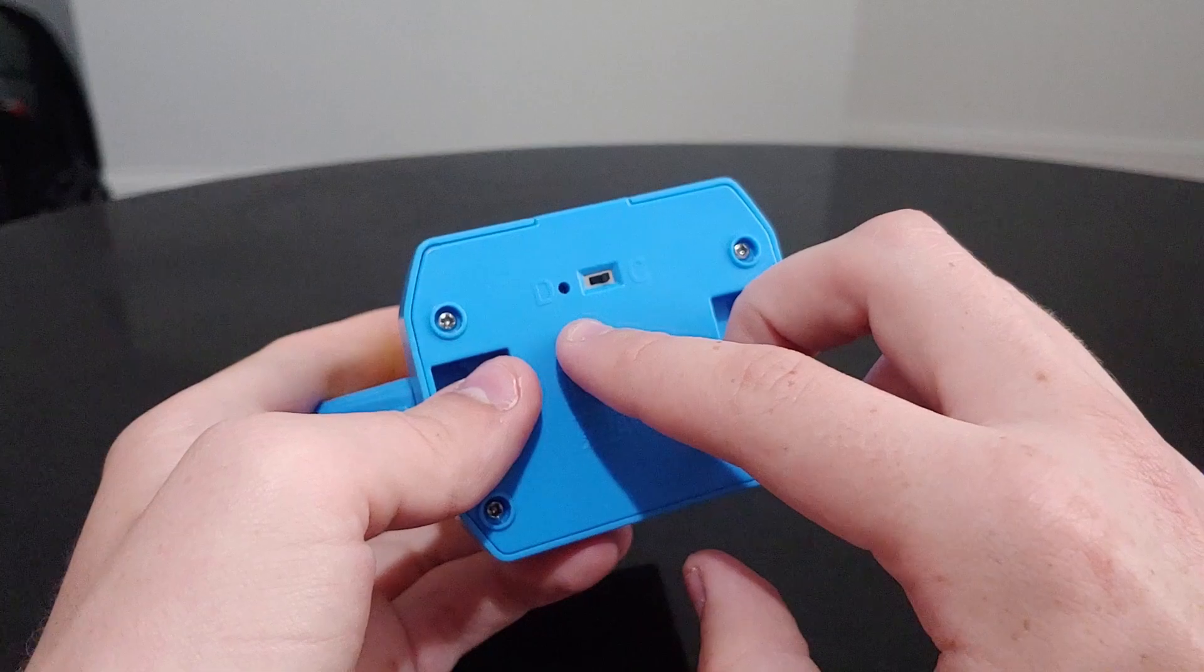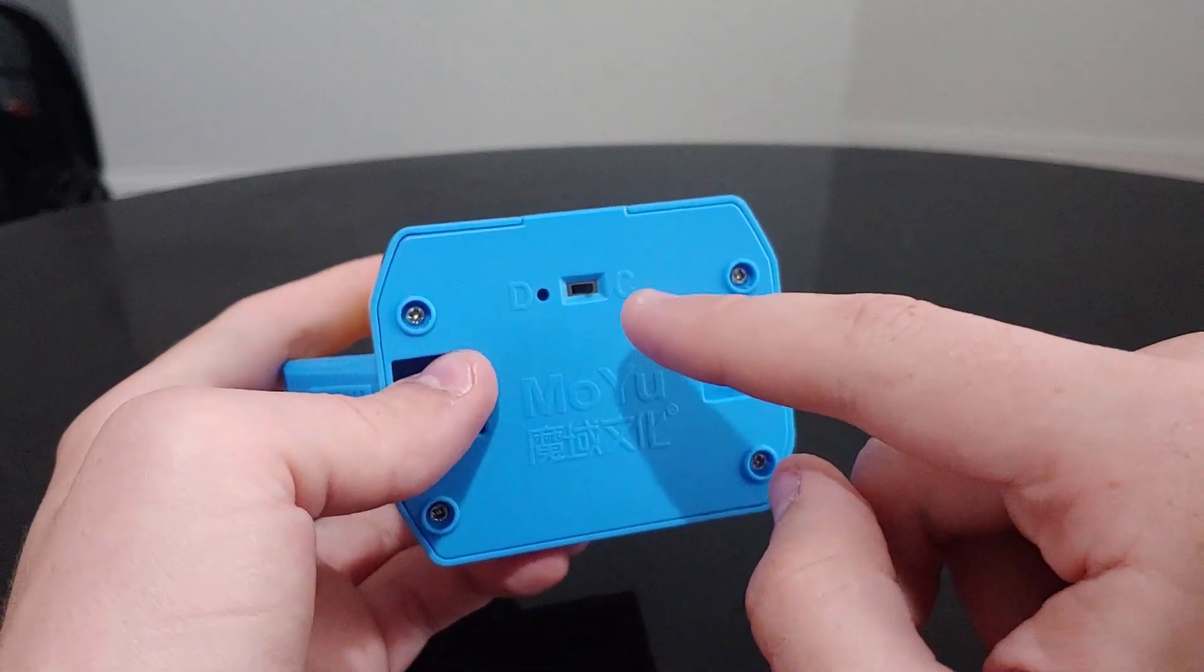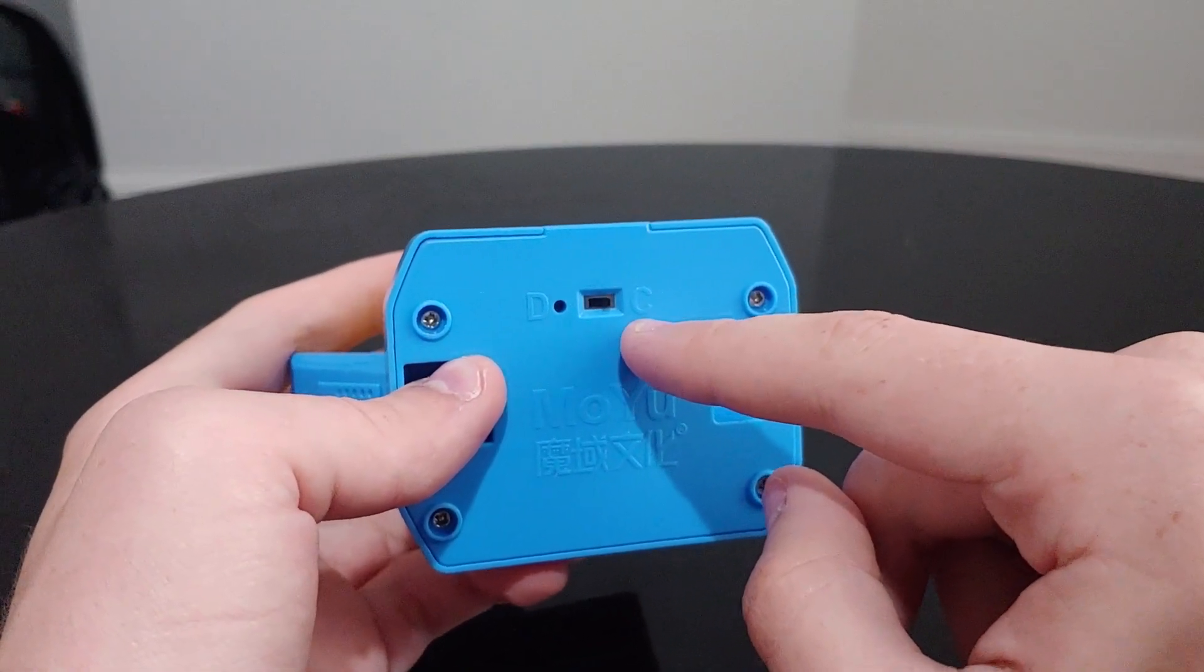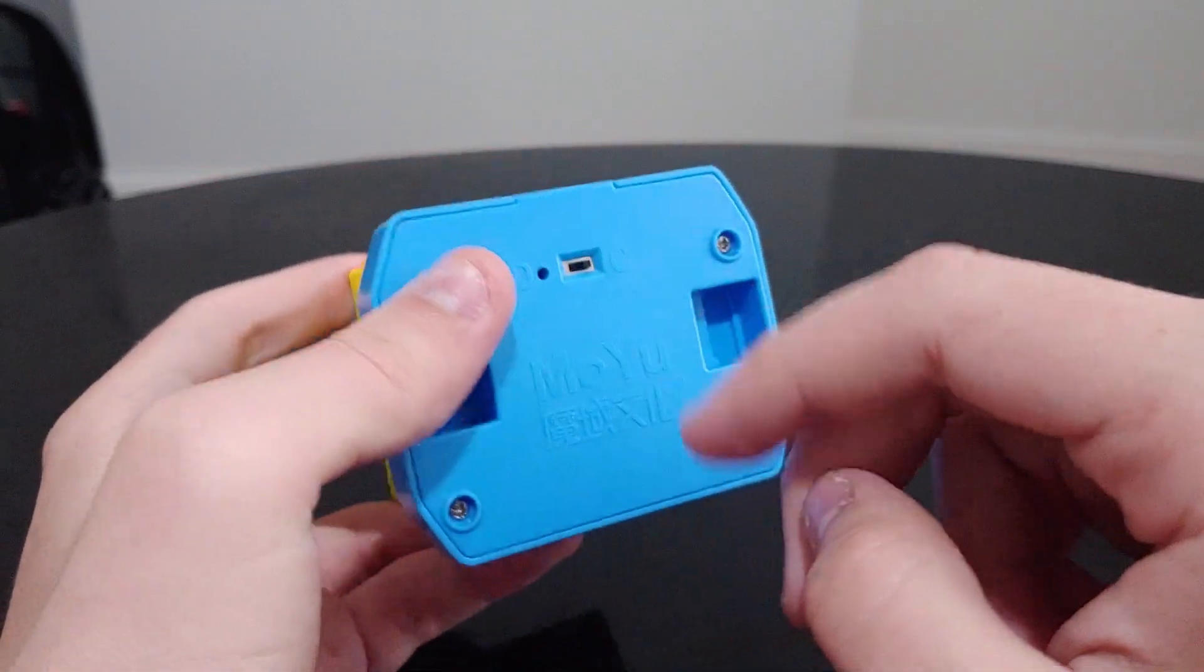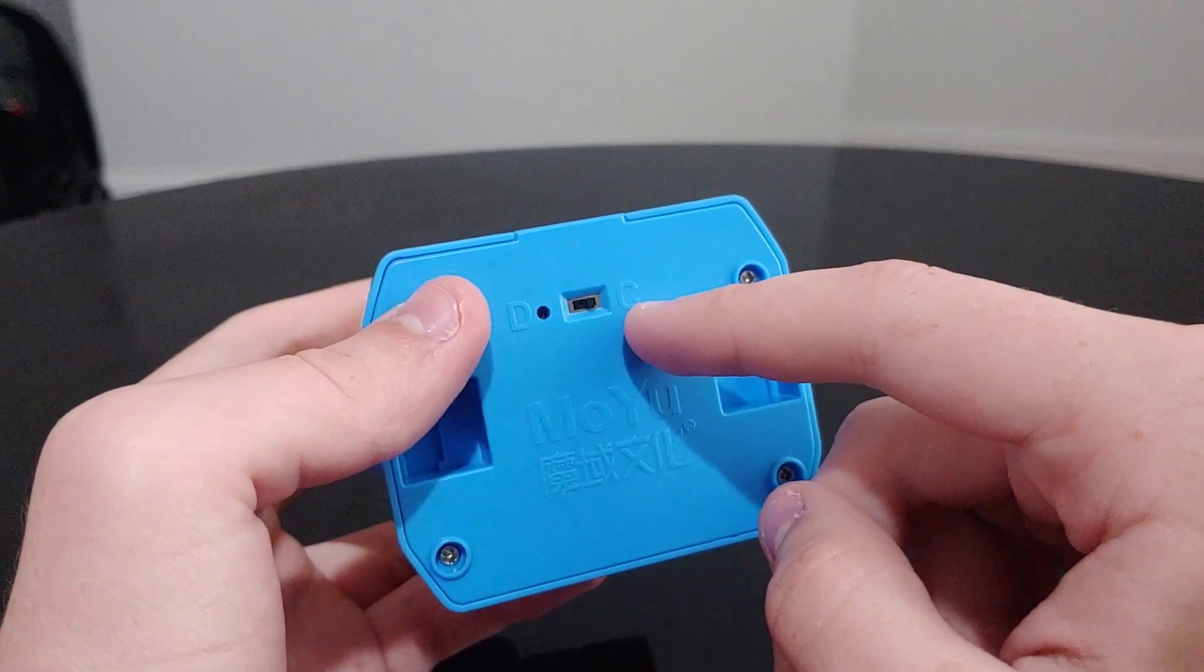It also has a switch on the bottom with D and C. C is what you're going to use pretty much all the time, and that's the standard charging side. If you plug the cube in, plug this into something, and put it on C, the cube will charge.